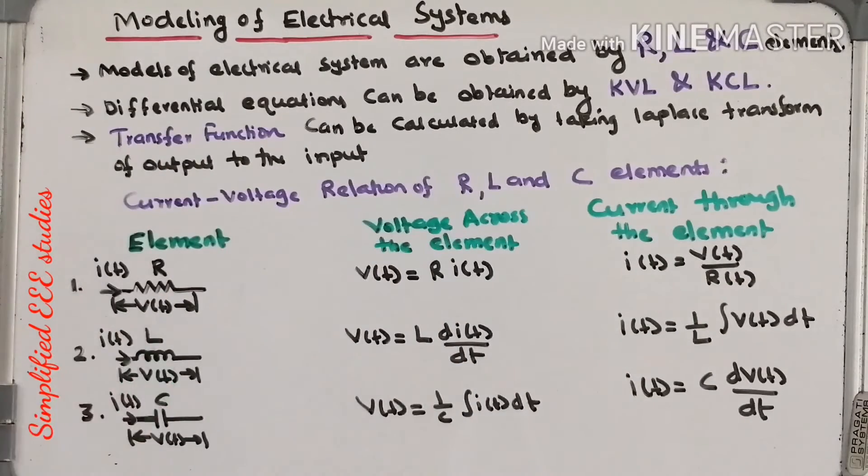Now let us move on to the inductor. Voltage across inductor is V(t) and the current through the inductor is I(t). There is one relation between voltage of inductor that is given by V(t) equals L into dI(t)/dt, where L is known as inductance.